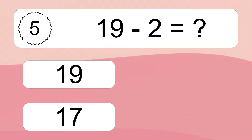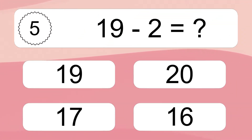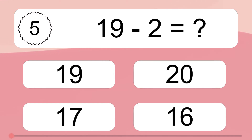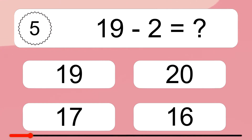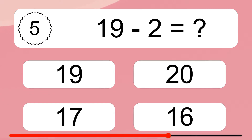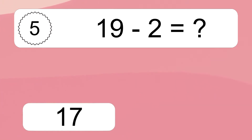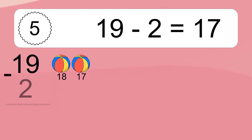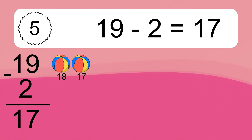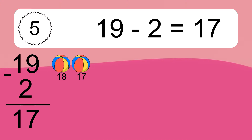19 minus 2 equals what? 19 minus 2 equals 17. Let's count it.